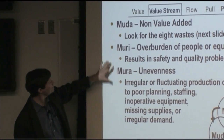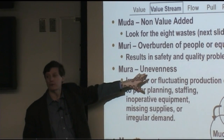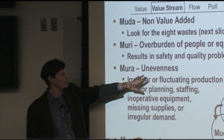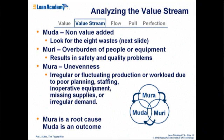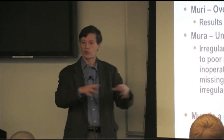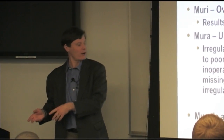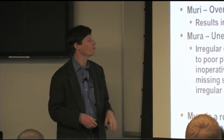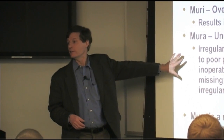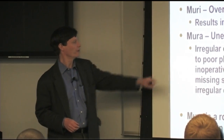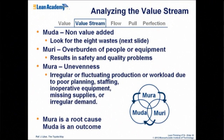Even more dynamic is mura — unevenness, instability. The idea is that if the process is uneven, if it's irregular or fluctuating, it can't flow. Using our fluid flow metaphor: if the stream is turbulent, if it has backflows, backwaters where it's not flowing, fast parts where it is flowing — if it's uneven, it's not going to be an efficient process. So these are also kinds of wastes that one should look for.